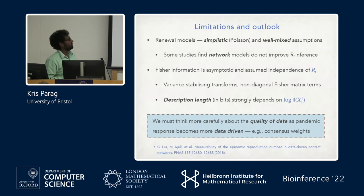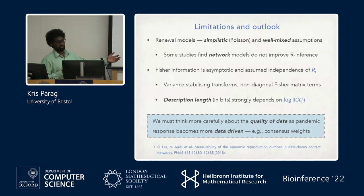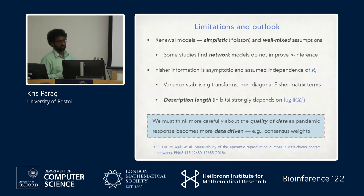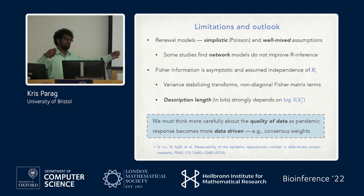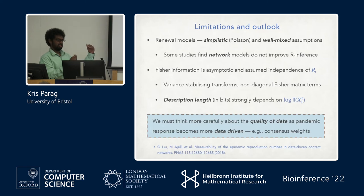There are limitations: we've used simplistic Poisson models with a well-mixed assumption, meaning anyone can infect anyone else with equal probability. However, studies using more realistic data-driven network models have shown that extra detail does not necessarily improve inference. Fisher information is an asymptotic measure and we've assumed independence of R(t)s across the time series. We could get around this using a variance-stabilizing transform — replacing R(t) with two times its square root — and the ratio results remain the same.